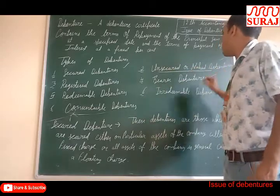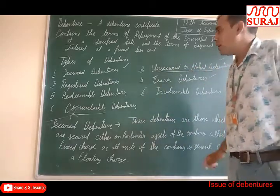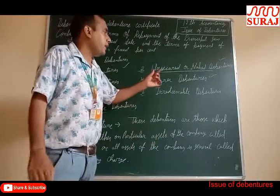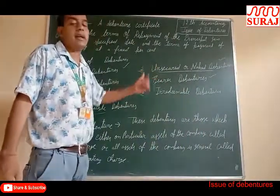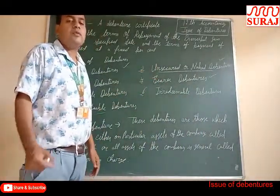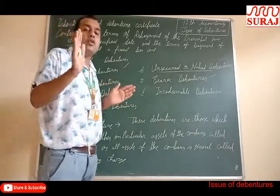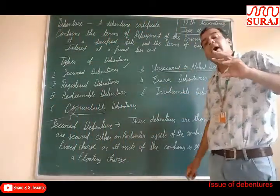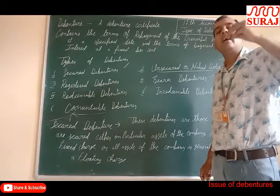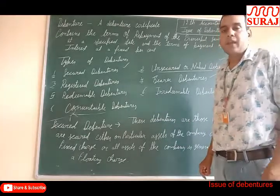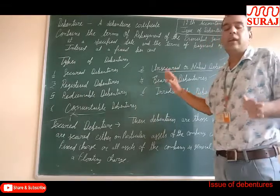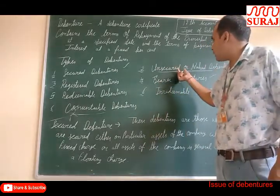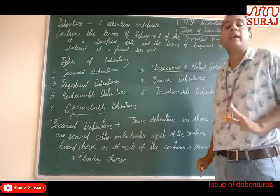Unsecured or naked debenture. Those debentures for which the company does not keep any assets as security — meaning these are not secured. At the time of liquidation, these debenture holders are treated like other creditors, as no security has been kept for the debenture.